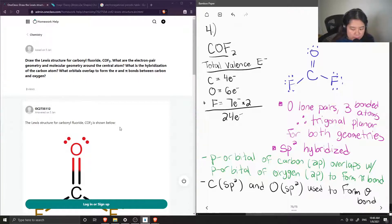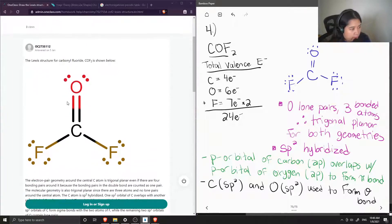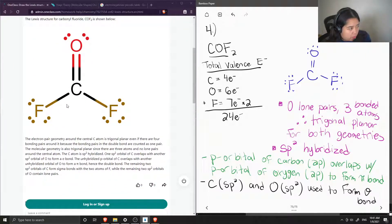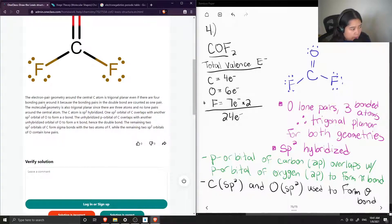Okay, so now let's see what the junior tutor said. So here's the Lewis structure for carbonyl fluoride, so it is the same as mine. Everything is neutral and there are 24 electrons in the structure. The electron pair geometry around the central carbon atom is trigonal planar even if there are four bonding pairs around it because the bonding pairs and the double bond are counted as one pair. The molecular geometry is also trigonal planar since there are three atoms and no lone pairs around the central atom.